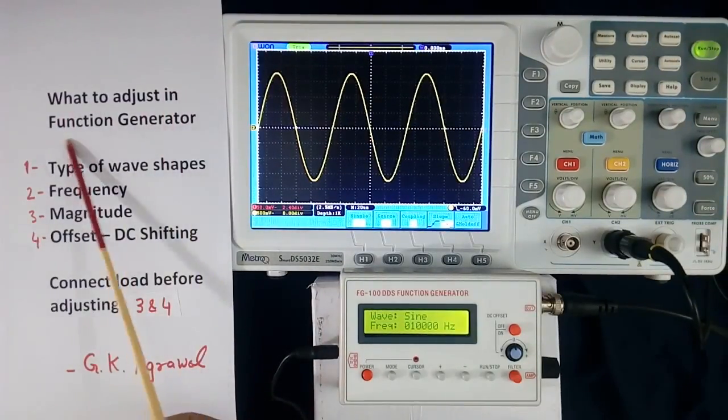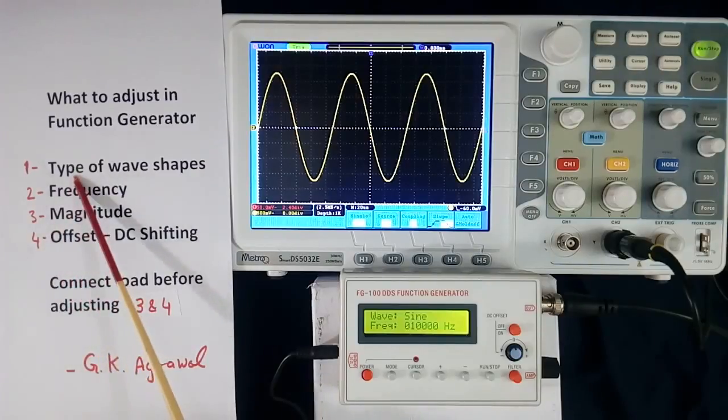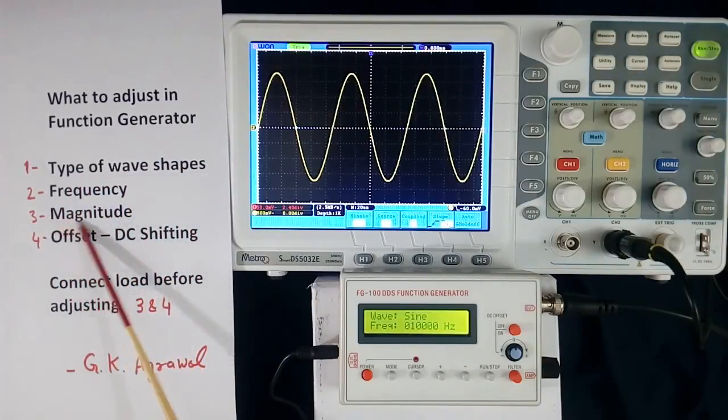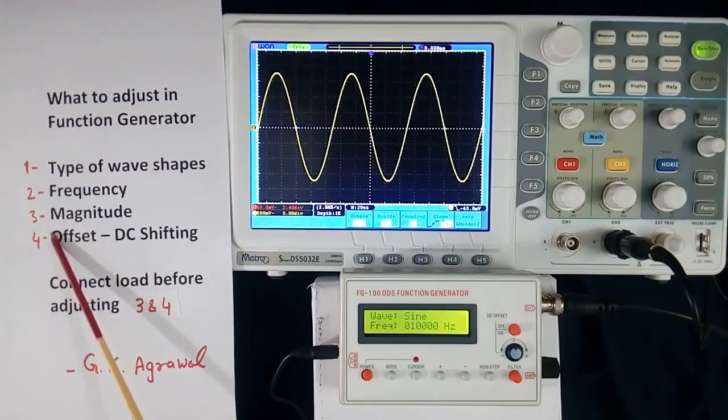Now what to adjust in function generator? Four things are adjusted: type of wave shape, frequency, magnitude, offset or DC shifting. Both are same. Before doing 3 and 4, we connect the load at the output of function generator.